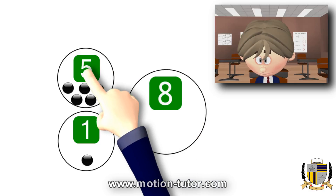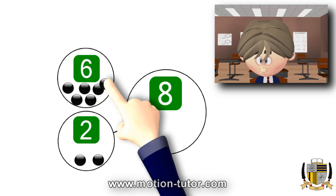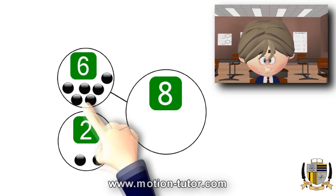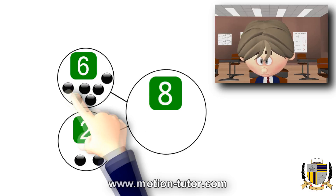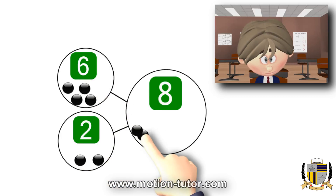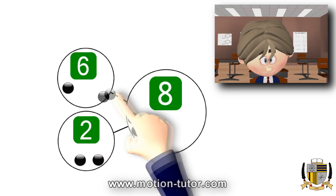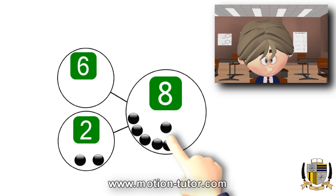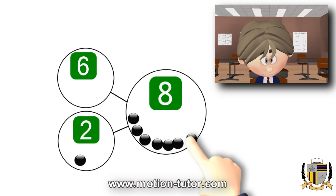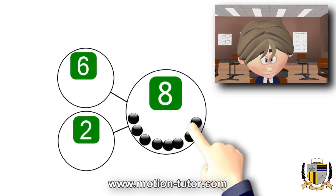Alright, I'm going to increase the numbers to eight. To get eight, you can try a six and a two. Let's see if I'm correct. Six in here and there's two. Let's see: one, two, three, four, five, six, seven, eight. There you go — eight.